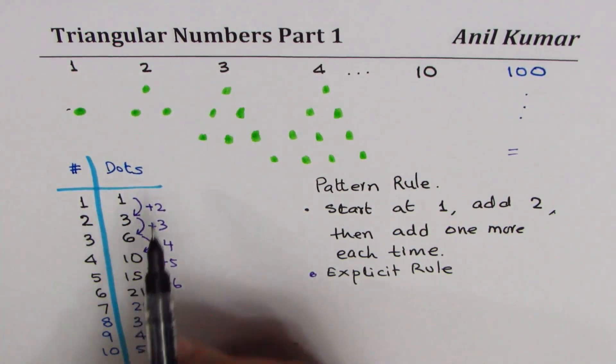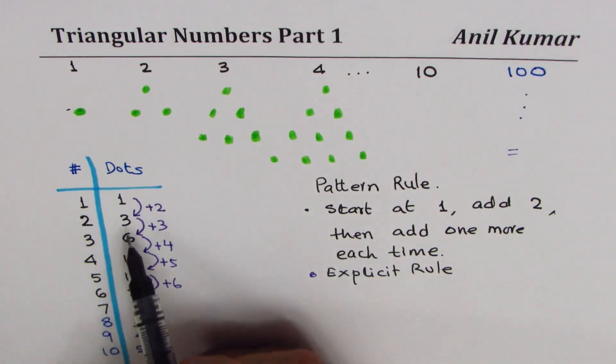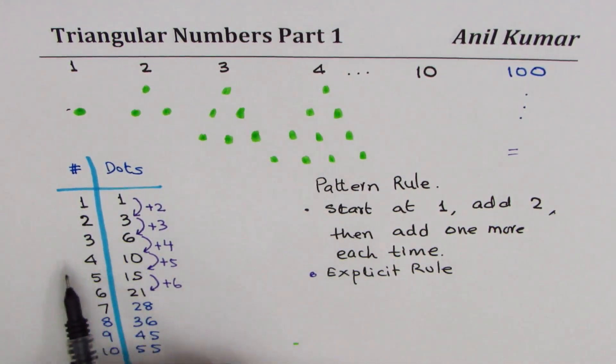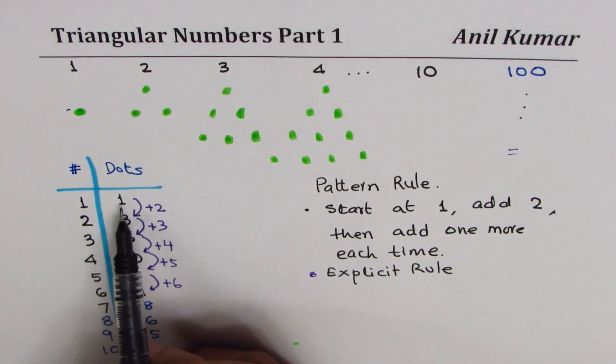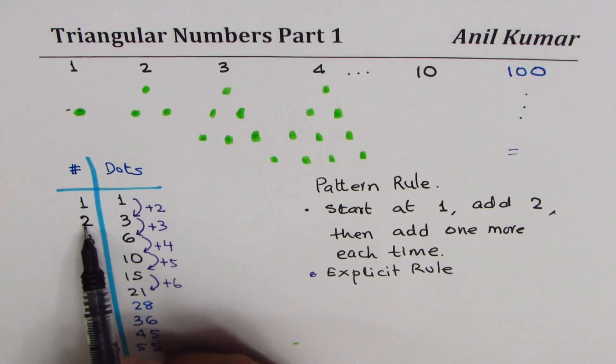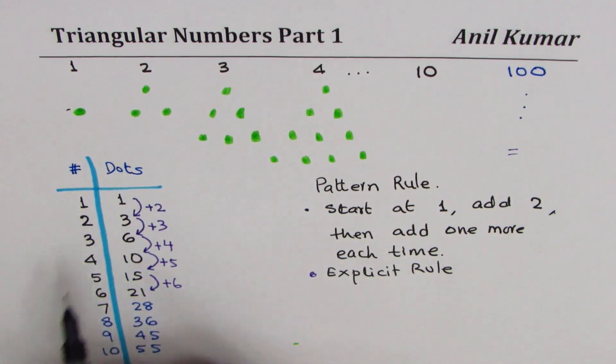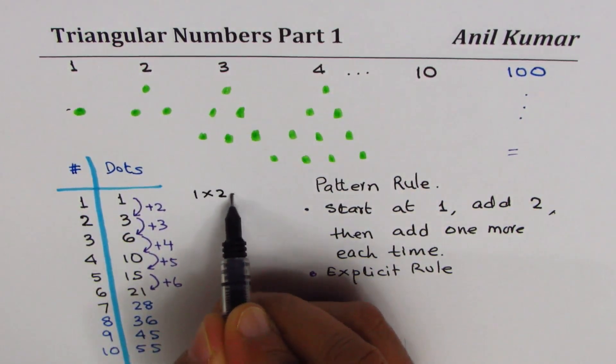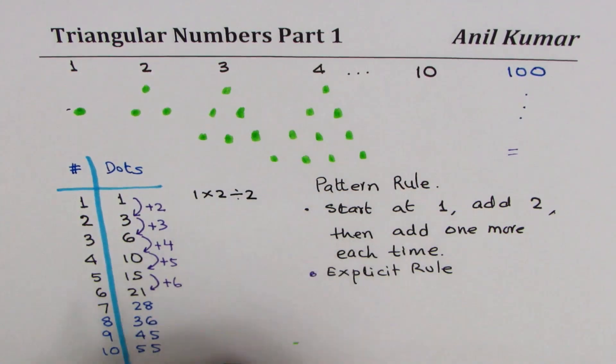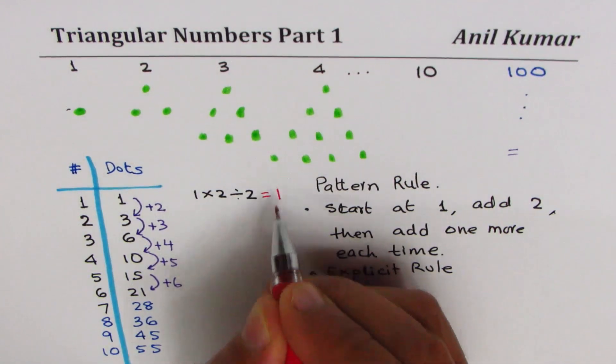what you observe is that these numbers could be derived if I do a small trick here. To get to one, I can multiply one and two and then divide by two. So if I do one times two and then divide by two, what do I get? Let's figure it out. One times two is two and then divide by two is one.